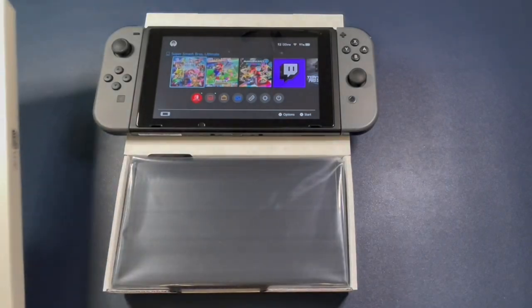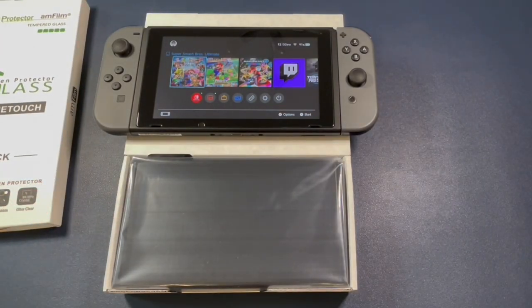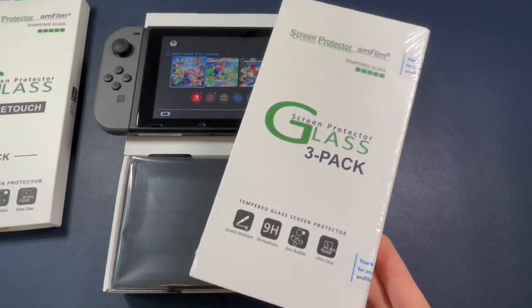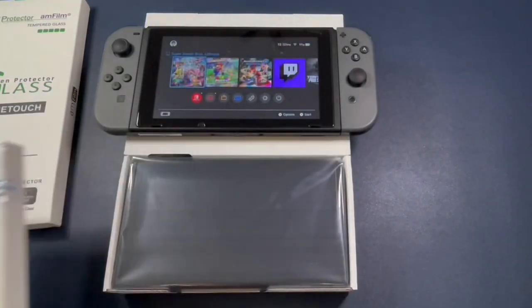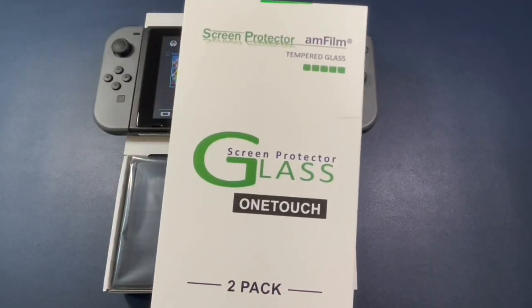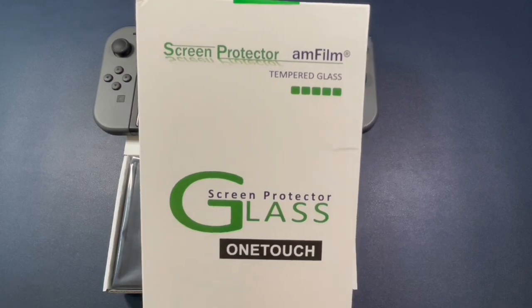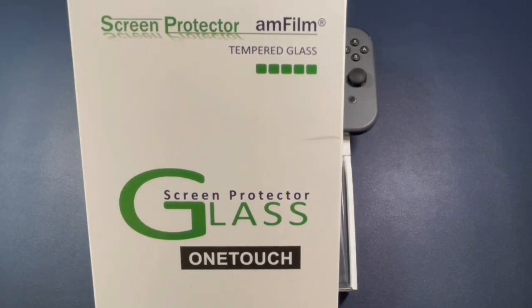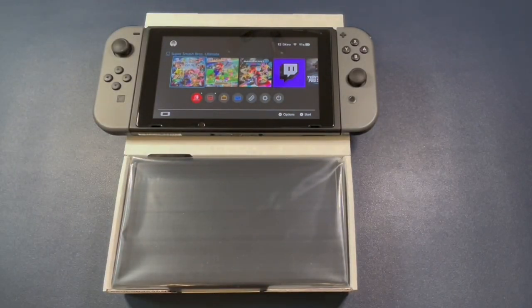So we're going to go ahead and put this on our Nintendo Switch OLED. Now you can get a three pack of the screen protector without the installation tray for 10 bucks. But for $5 more, you get the two pack with the two installation trays. And I'm going to show you right now how to put it on. This is the AM Film One Touch Tempered Glass Screen Protector for the Nintendo Switch OLED.